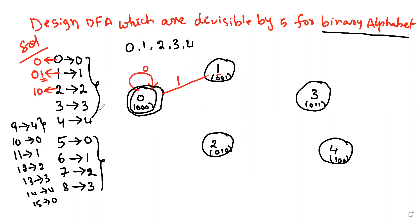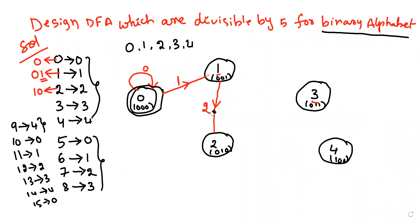An important thing to remember: you cannot write 2 here directly. If you write 2 the remainder value would be 3, but we are expecting remainder 2 for the second state. The binary for 2 is 10 — we already have 1, so we write 0. For 3, the binary is 11, so remainder 3 maps to state 3; we write 1 again.